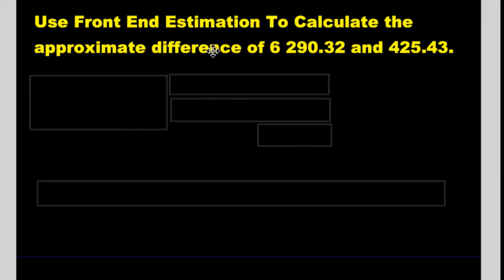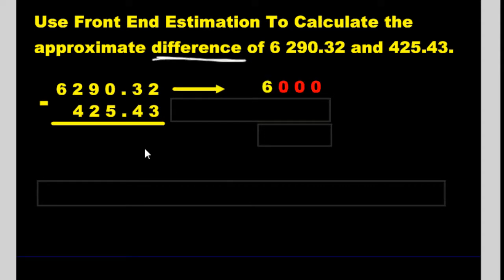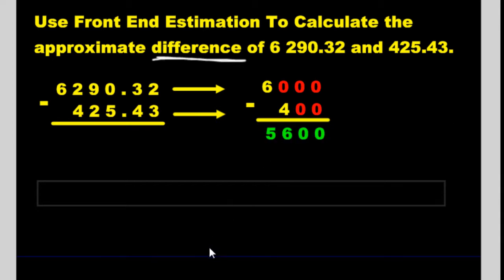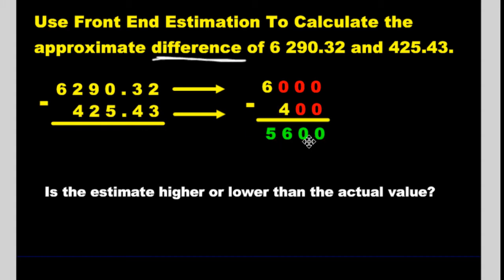Use front end estimation to calculate the approximate difference of these two numbers. Difference means subtract. We're going to change this number into 6,000 — the decimal is gone, we don't need it because it's six followed by zeros. This other number becomes 400. Is the estimate higher or lower than the actual value? Since we lowered the numbers, our estimate is going to be lower than the real number — it's a low end estimate.